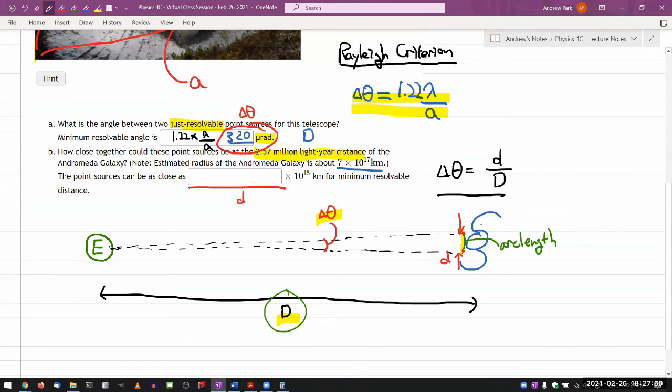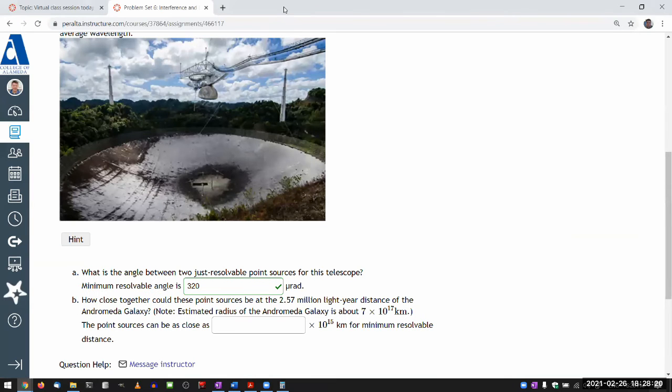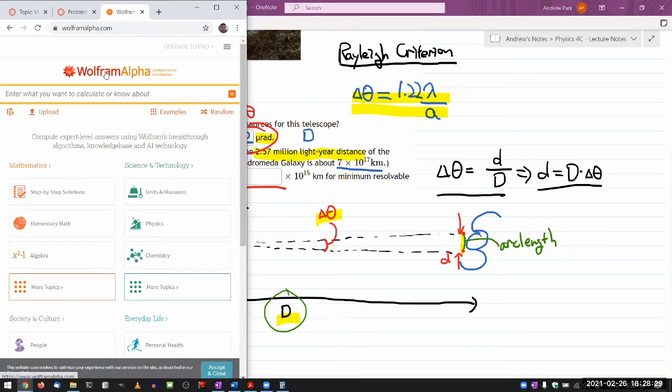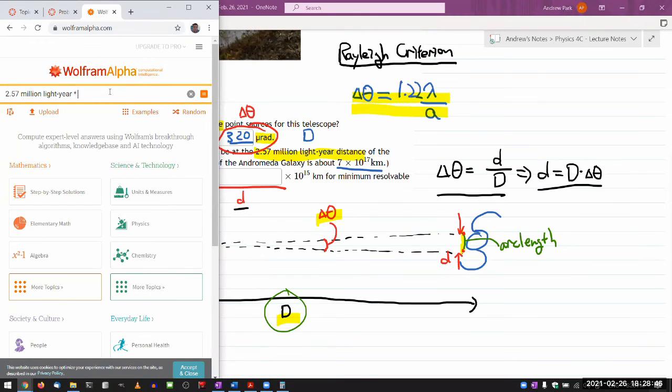Then if you remember the definition of radian and how radian is defined in terms of the radius and arc length, you can write down this expression. That this angular separation is the arc length, small d, divided by the radius, which is the distance from Earth to Andromeda galaxy, capital D. So that's it. That's the relationship. All you have to do is solve for the quantity that we want, d. So that minimum separation that we can resolve using this radio telescope is the capital D, the distance to the Andromeda galaxy, times the angular separation delta theta.